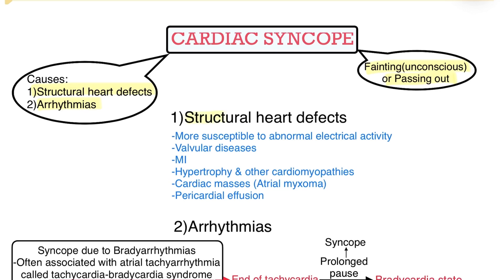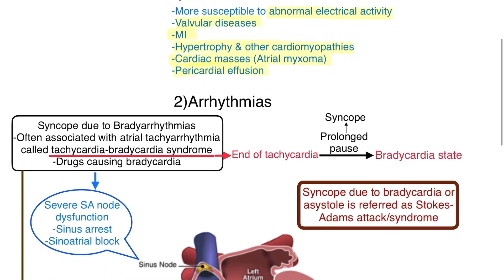Structural heart defects are one of the main causes of abnormal electrical activity in the heart, meaning the heart is more susceptible to abnormal electrical activity in structural heart defects. Some examples of structural heart defects are valvular diseases, myocardial infarction, hypertrophy and other cardiomyopathies, cardiac masses such as atrial myxoma, and pericardial effusion.